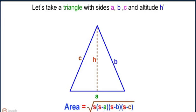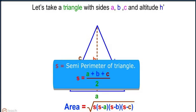By Heron's formula, area of a triangle can be stated as under root S into S minus A into S minus B into S minus C, where S is the semi-perimeter of triangle. That is, S is equal to A plus B plus C by 2.